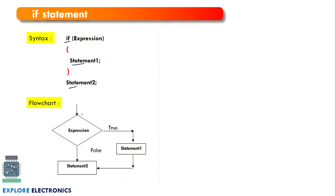In the flowchart, we have an expression. If this expression evaluates to true, statement one written inside the if block will be executed. If the expression evaluates to false, statement one will not be executed and control directly goes to statement two, which is written outside the if condition.